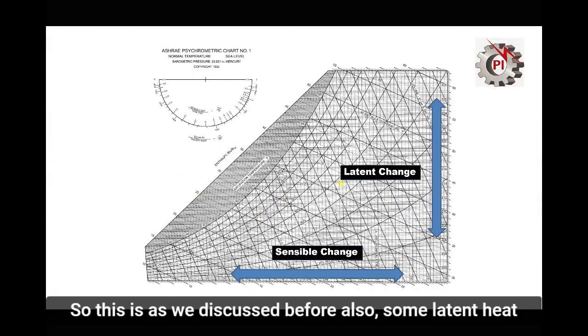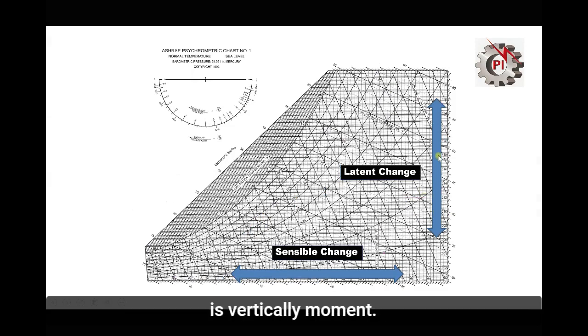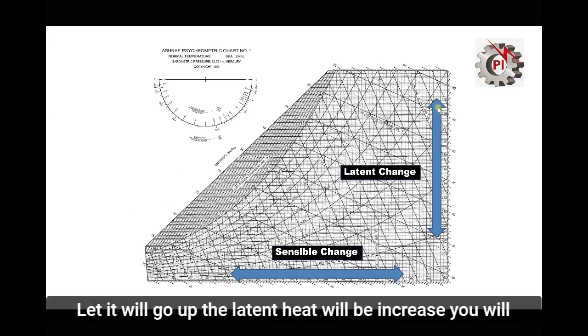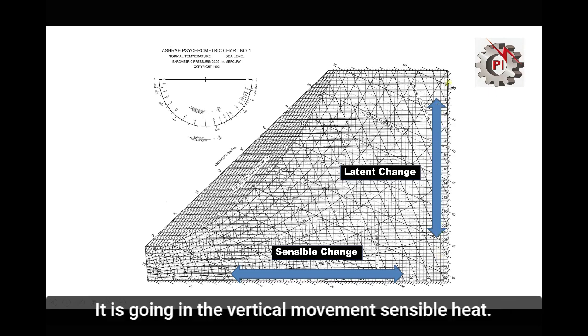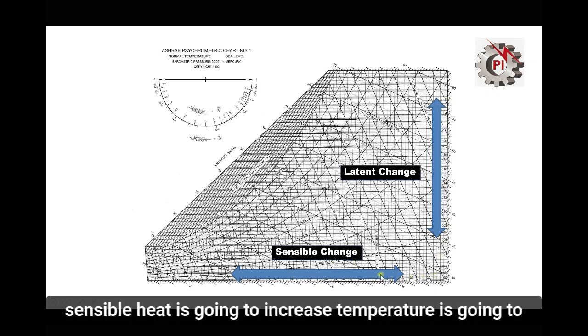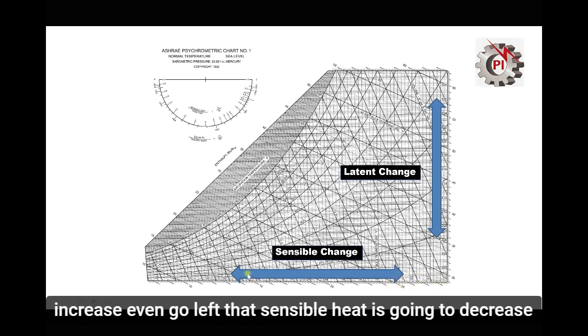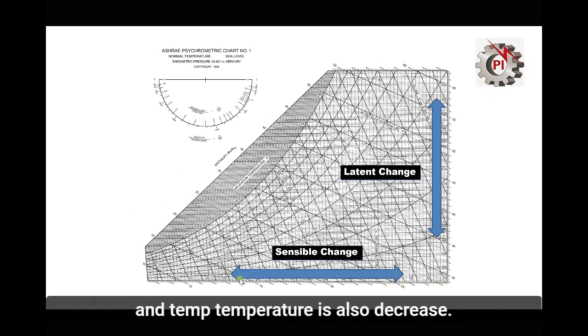To summarize: vertical movement on the psychrometric chart represents latent heat — going up increases latent heat, going down decreases it. Horizontal movement represents sensible heat — going right increases sensible heat and temperature, going left decreases them. This was the psychrometric chart — I hope you understand. Thank you.